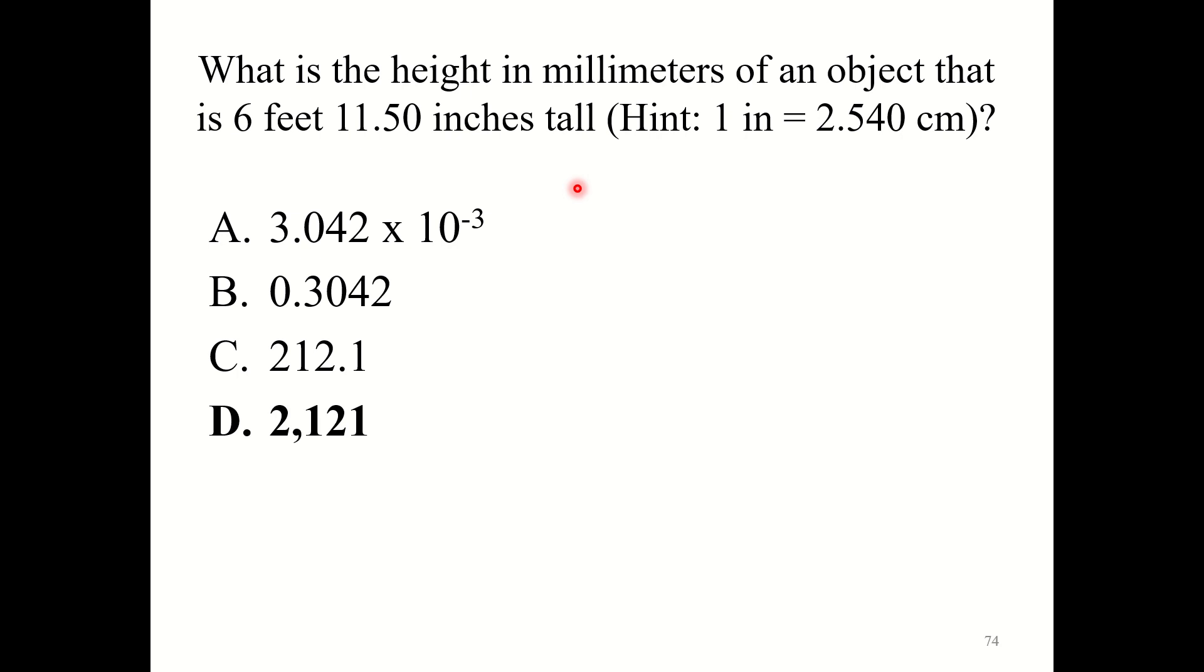Alright, correct answer here is D, 2,121. So here first you'd want to convert this to inches. So 6 feet should be equal to 72 inches. So we have a total of 83.50 inches. That's the height of this object. Convert from inches to centimeters using this conversion factor. Then you needed to convert from centimeters to millimeters. And your answer here is D, 2,121 millimeters.